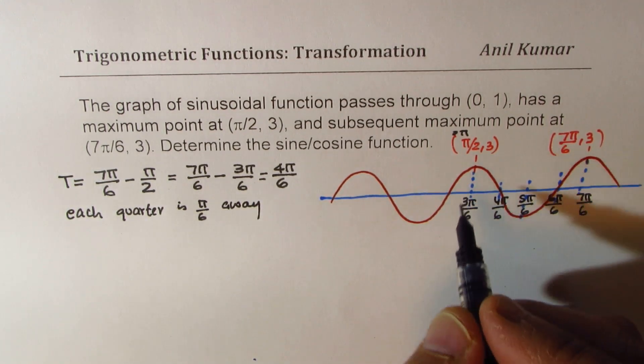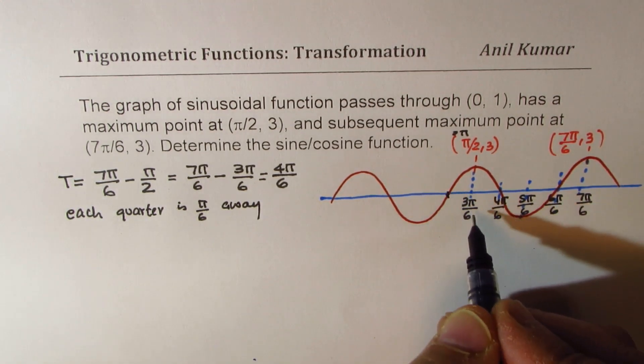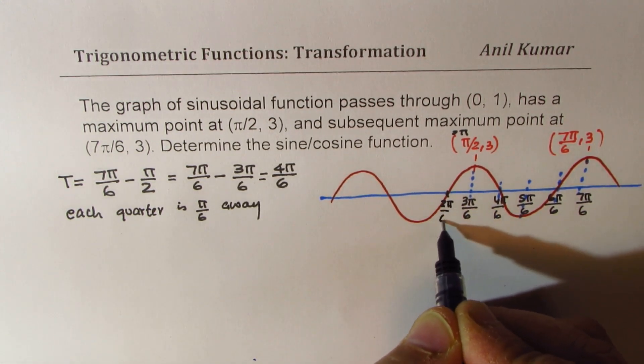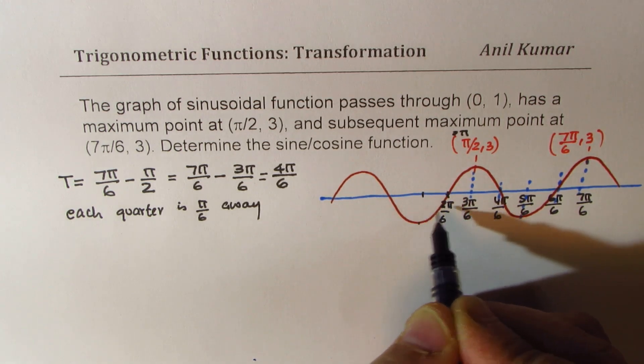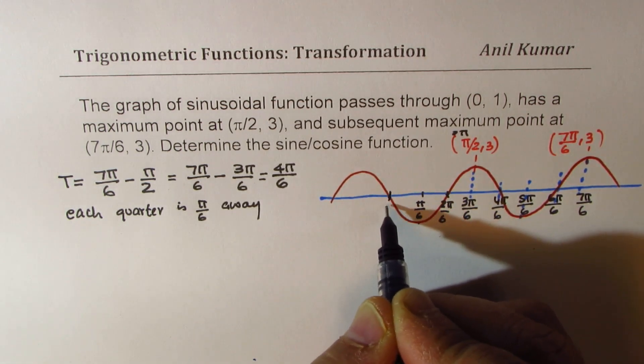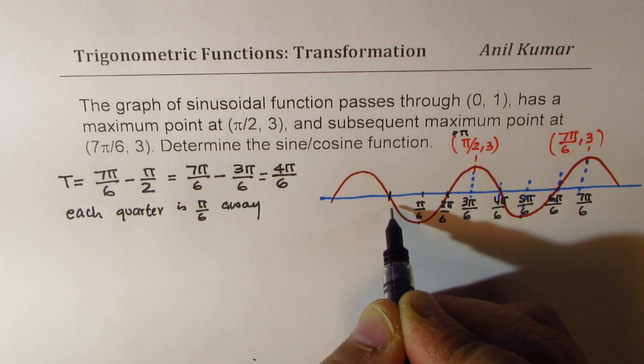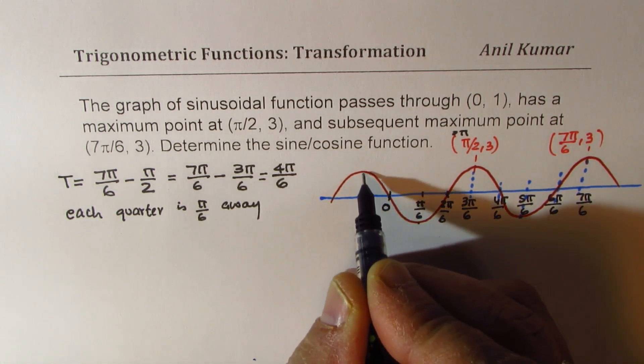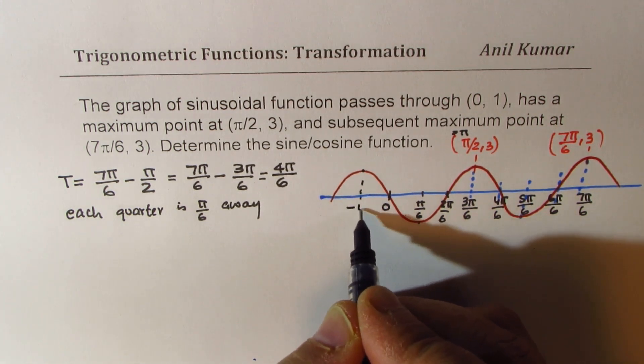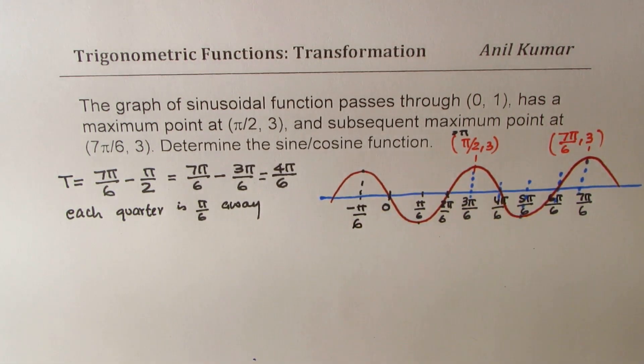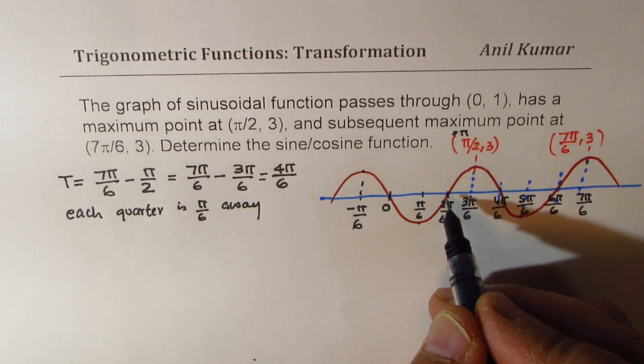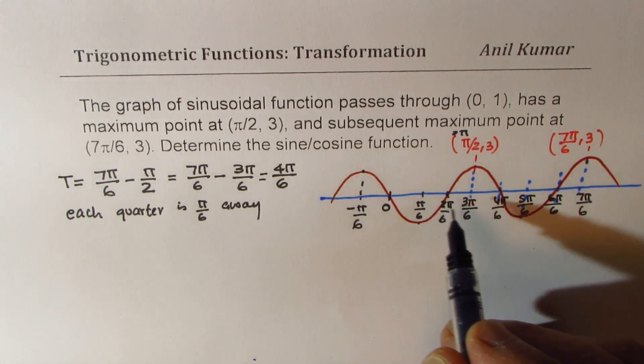So if you move towards the left side, this point will be 2π/6. And then here we have π/6 and then here we have 0π/6, or just 0, and then here we are going to have minus π/6. So each quarter is π/6 away.